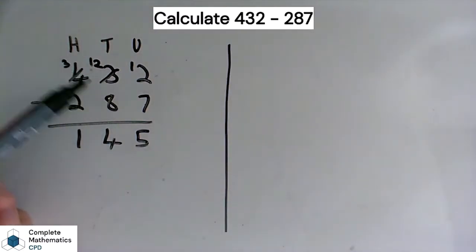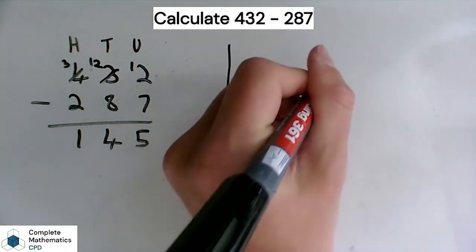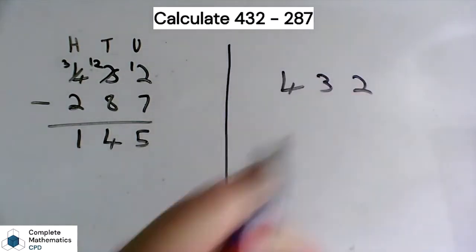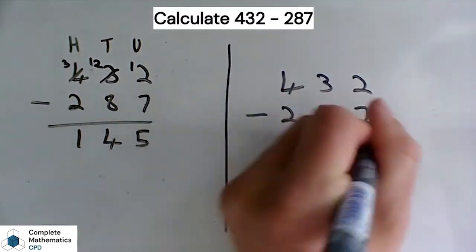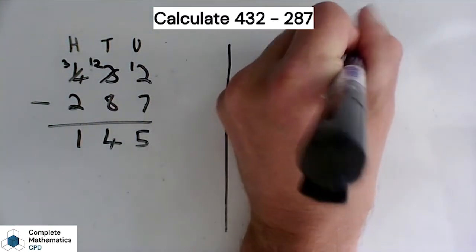So here's a different method which doesn't require any exchanging. It sets out exactly the same way, so 432 minus 287. Again, let's put our headings on: our hundreds, tens, and our units.